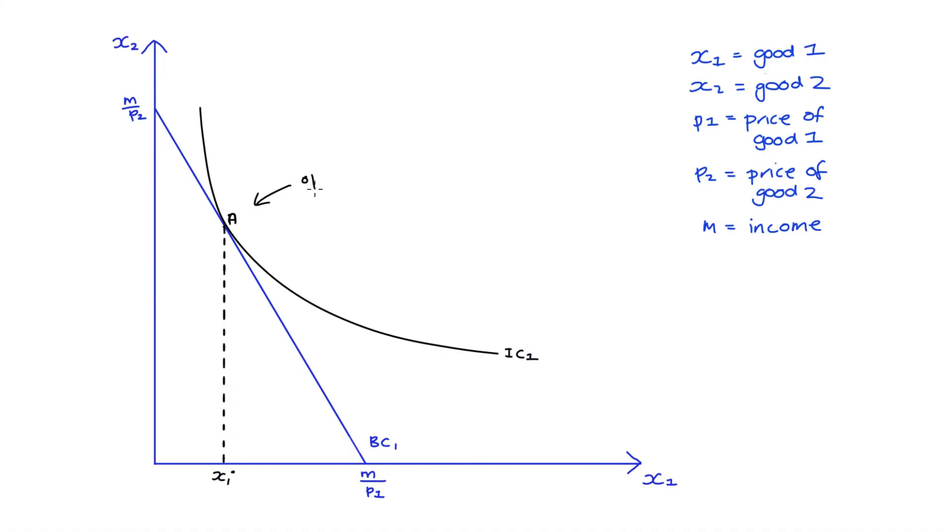I've isolated our optimal choice which is bundle A and this corresponds to x1 star level of consumption of good one. Now the optimal point here is the tangency point where the slope of the indifference curve, which is our marginal rate of substitution, is equal to the slope of the budget constraint, which is the negative of the price ratio P1 over P2.